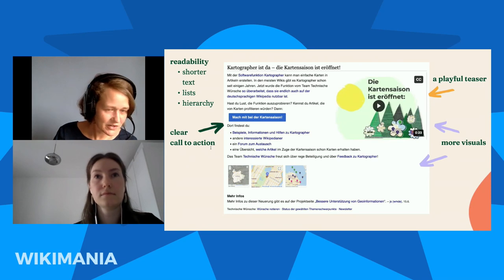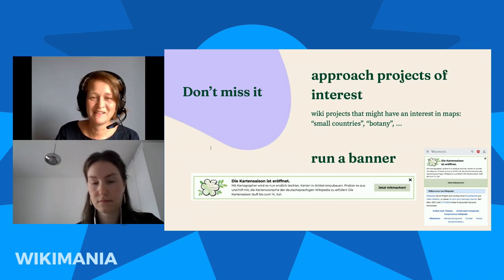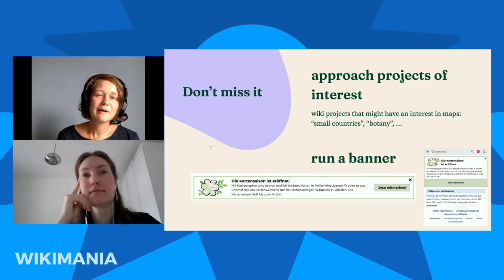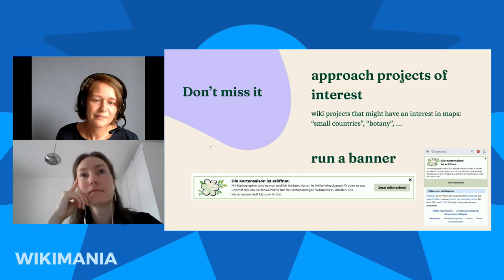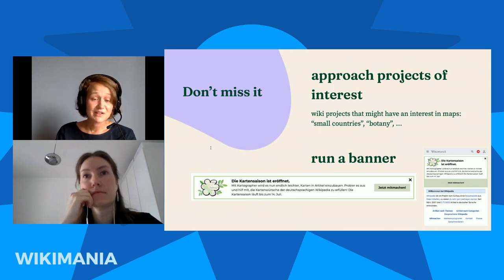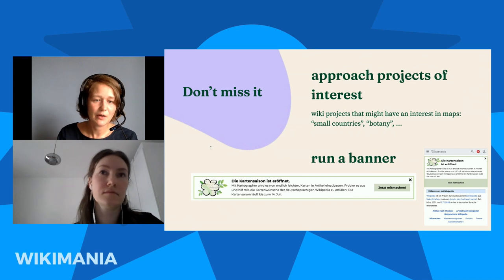There was one last problem we tried to fix: people who are not very active on village pumps would miss that something was going on at all. For this project we tried two different things. First, we did research and thought carefully about which wiki projects within German Wikipedia would have a particular interest in adding maps to their articles — such as the wiki project for small countries or the wiki project for botany — and reached out to alert them about the cool new feature. Second, we ran a banner — banners are not unusual for wiki campaigns, but to advertise a software feature was a pretty new thing.